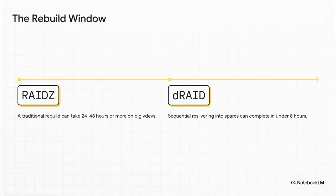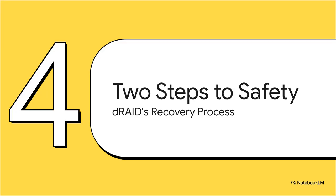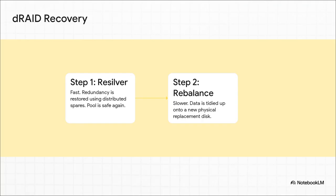And we're not talking about a small difference here — it is a night-and-day comparison. With a traditional RAID-Z system and these huge modern drives, a rebuild can take 24, 48 hours, sometimes even longer. That's two full days of just sweating it out, hoping another drive doesn't pop. With DRAID, because every single drive in the pool helps with the rebuild, people are seeing times under 8 hours. That window of vulnerability just shrinks dramatically. DRAID's secret weapon is a unique two-step recovery process. Step one is the fast part — resilvering. The system just blasts the lost data into that distributed spare space. Once that's done, in under 8 hours, your full redundancy is back and the pool is considered safe again. Only after that's finished does the slow second step, rebalancing, even begin.